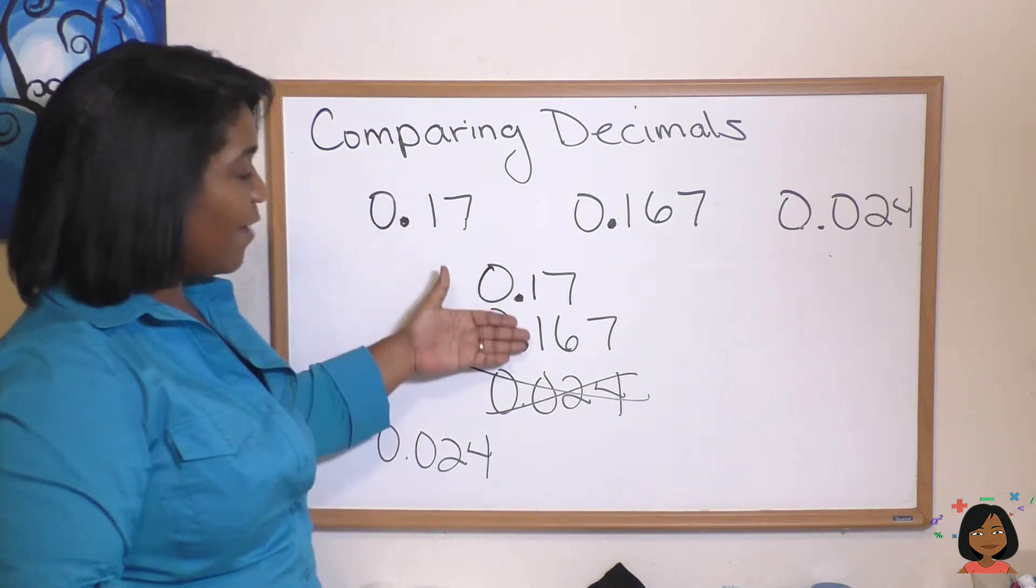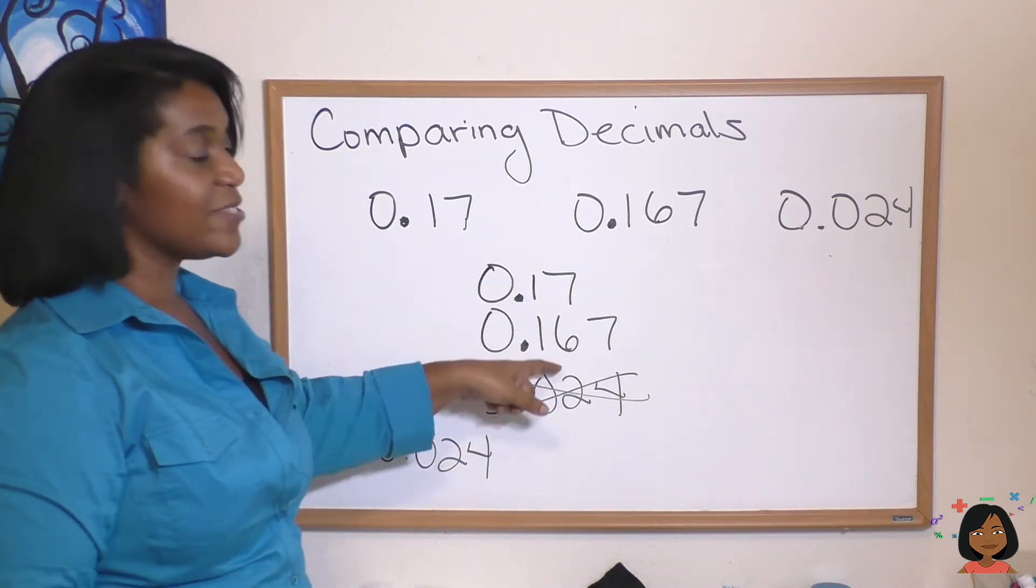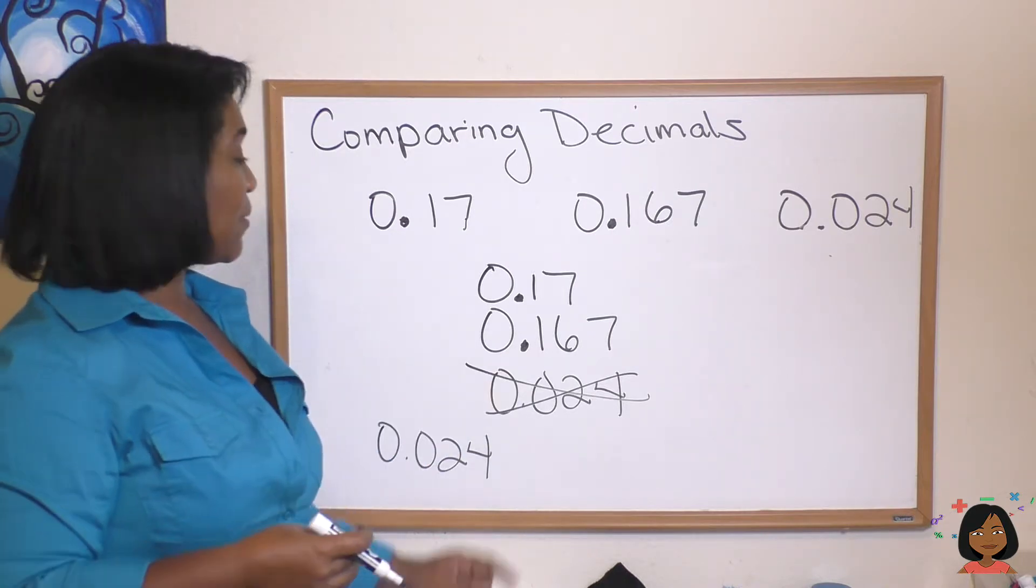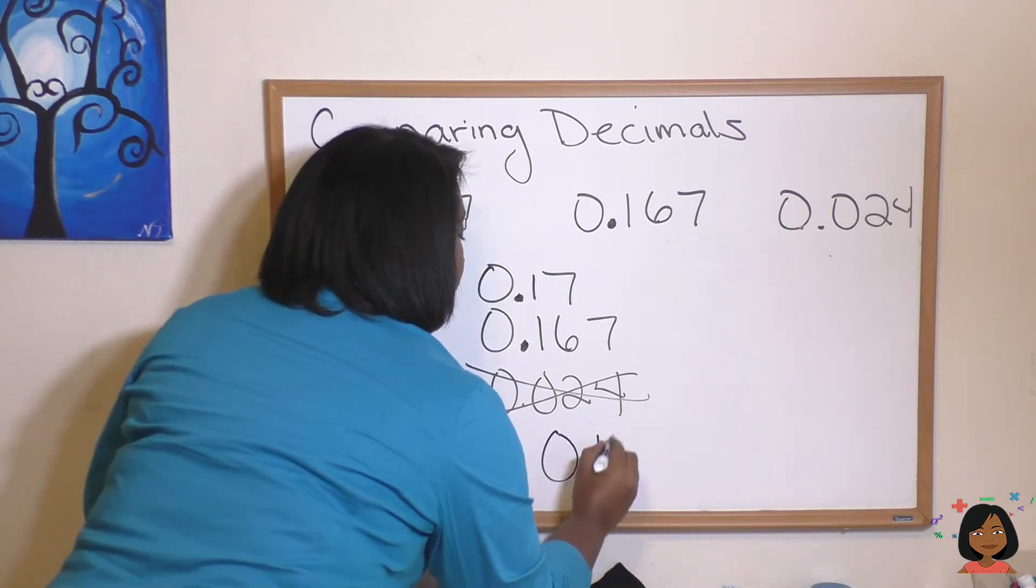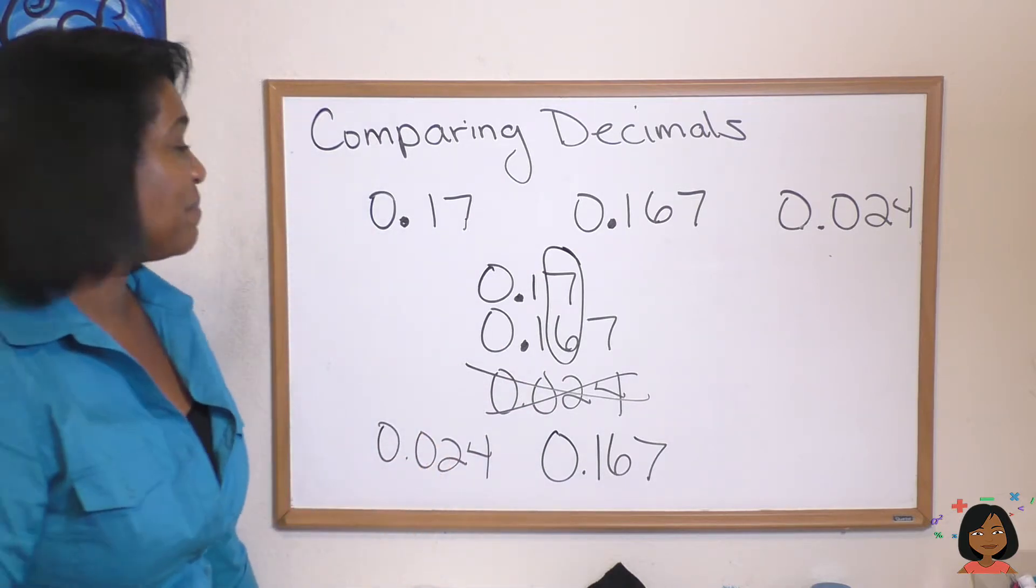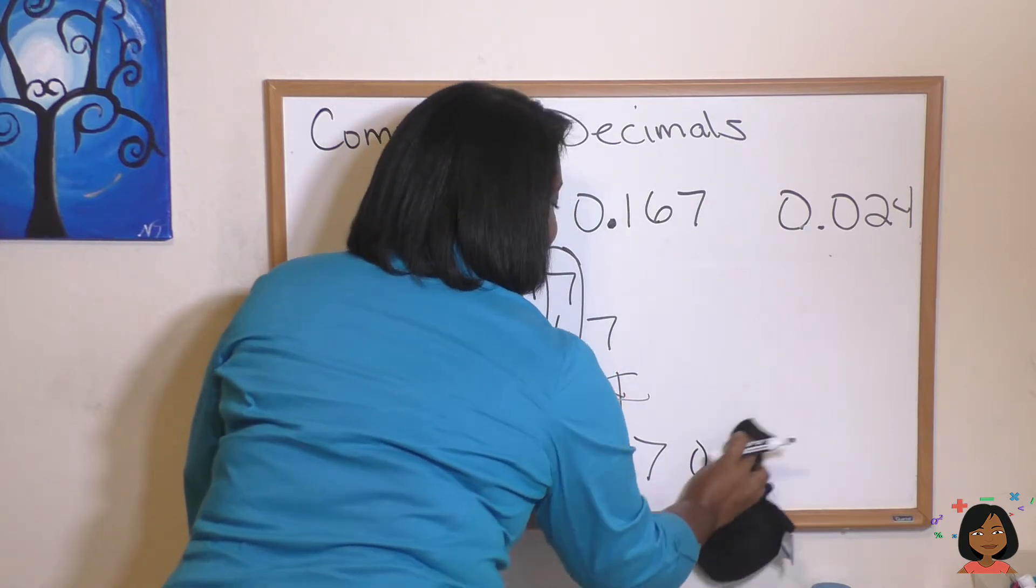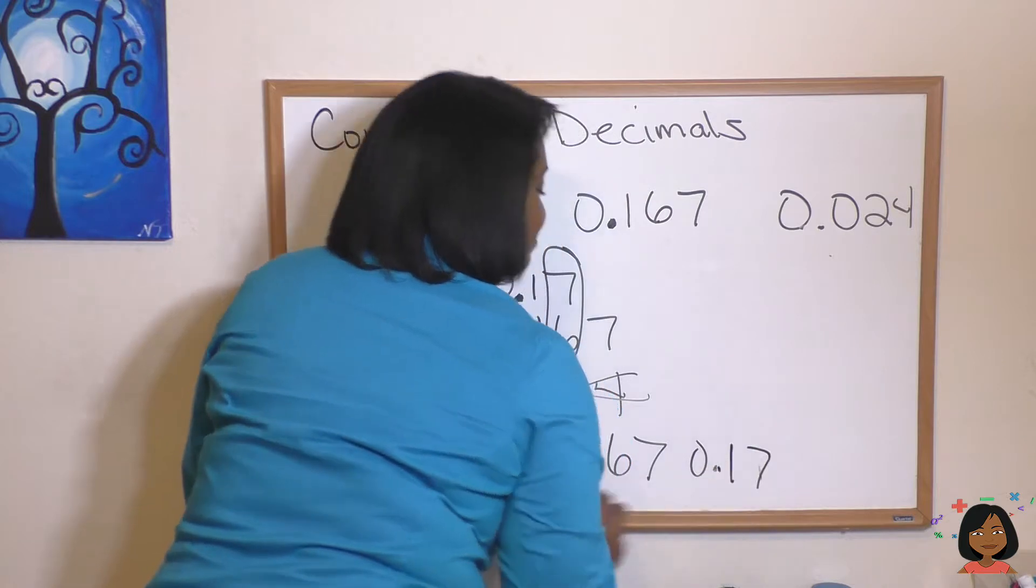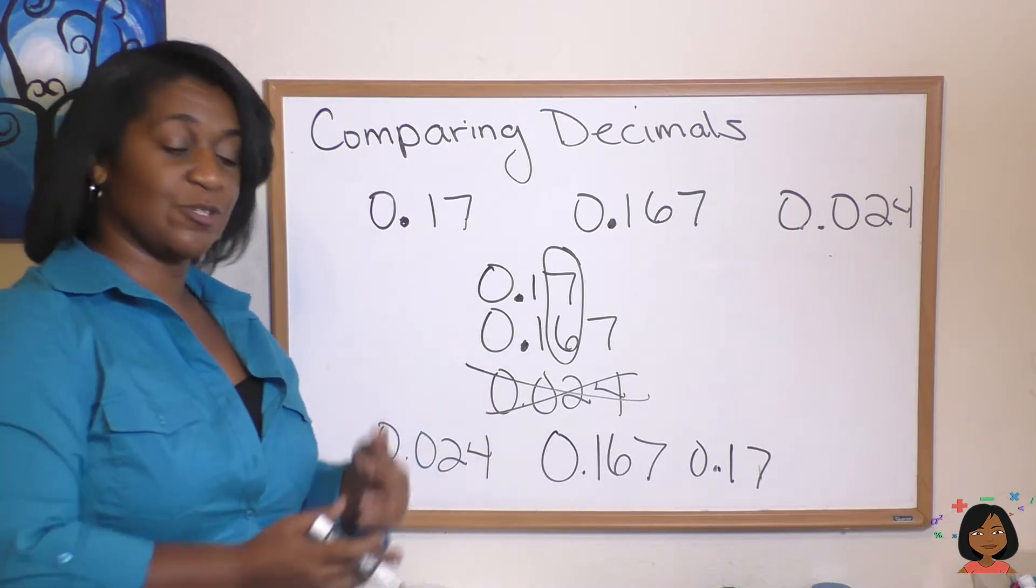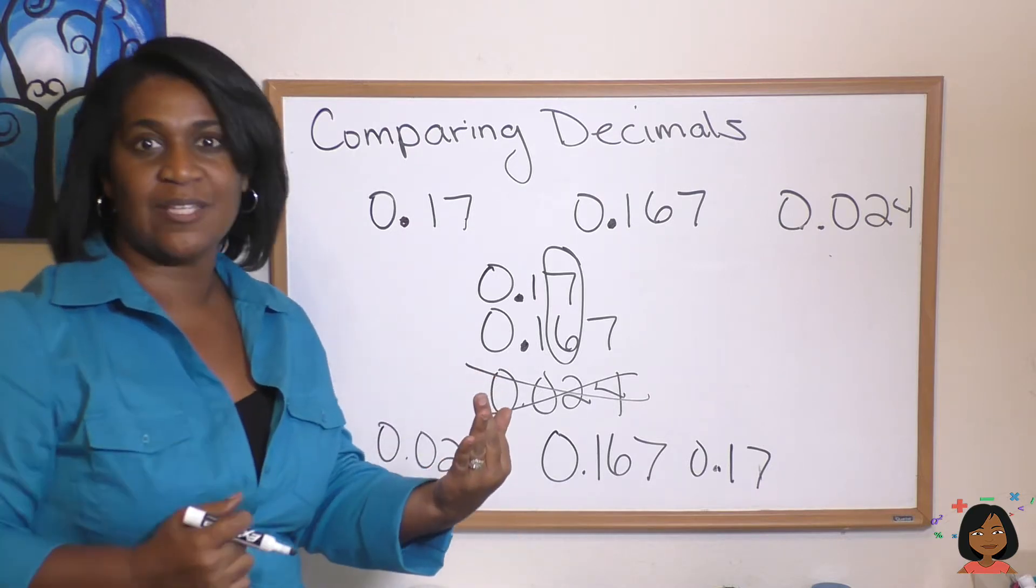Now let's look at the next two numbers. They both have ones in the tenths place, so now we move out to the hundredths place. We have a seven here and a six here. Which one is smaller? The six is, so we know our next smallest number is 0.167 because we're comparing the hundredths place. Then our last number is 0.17. The rule is you're comparing the place values. You start with the tenths, see which is smallest or biggest, then you move out to the hundredths if you need to, then the thousandths if you need to.